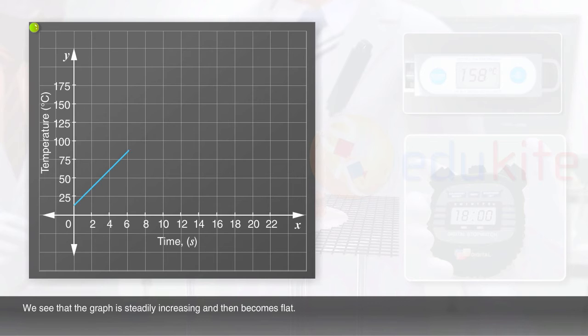We see that the graph is steadily increasing and then becomes flat. The flat portion gives the boiling point of apple juice. It is 158 degrees Celsius.